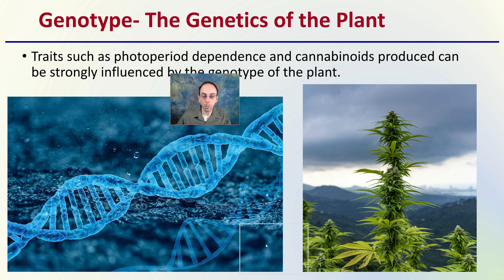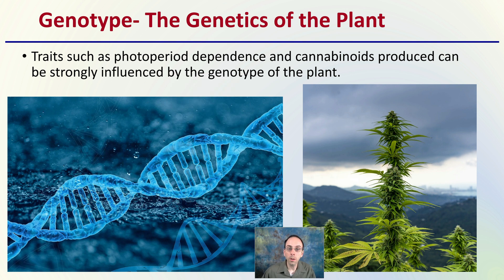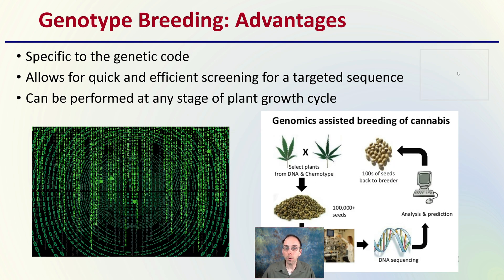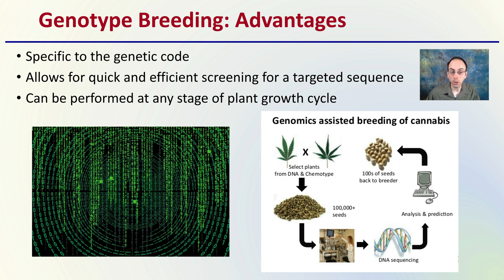That leads us to genotype breeding. Traits such as photoperiod dependence and cannabinoids produced can be strongly influenced by the genotype of the plant, which is why using the genes can be a very important and powerful tool. The advantages are that it's very specific to the actual genetic code, allows for quick and efficient screening for targeted sequences, and can be performed at any stage of the plant growth cycle. The genetics at the seedling stage will ideally be the same at the end, speeding up the breeding process — you can grow a bunch of seedlings, screen them for their genetics, and select out those that don't have the sequences deemed desirable.